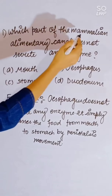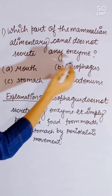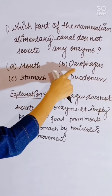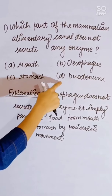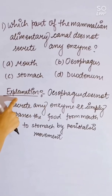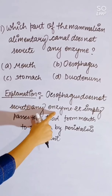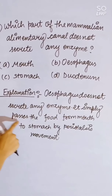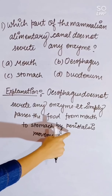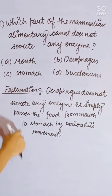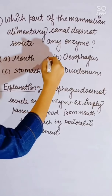Which part of the mammalian alimentary canal does not secrete any enzyme? Options: mouth, esophagus, stomach, or duodenum. The esophagus does not secrete any enzyme — it simply passes food from the mouth to the stomach by peristaltic movement. Correct answer is esophagus.